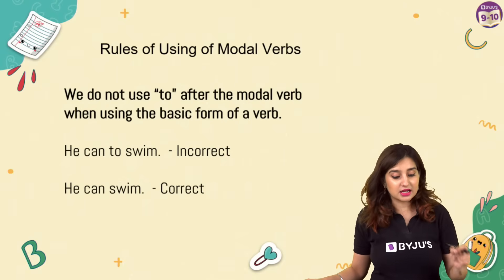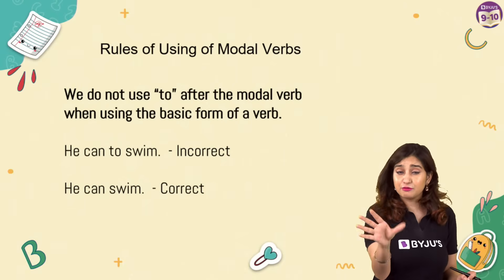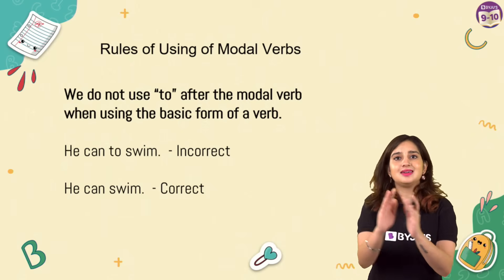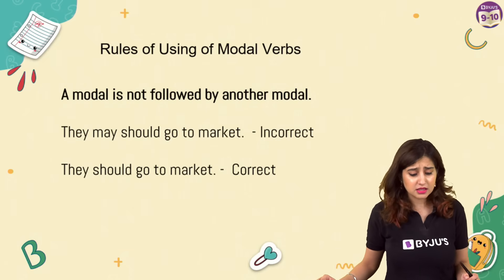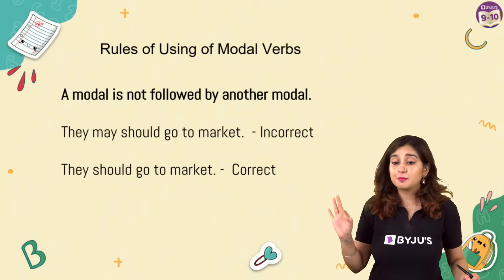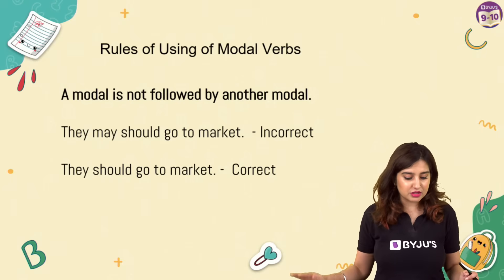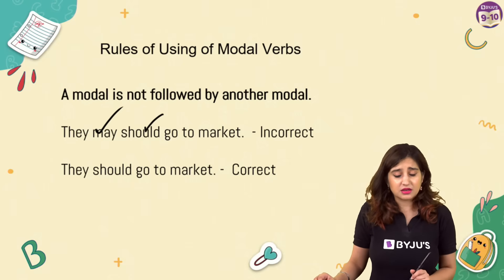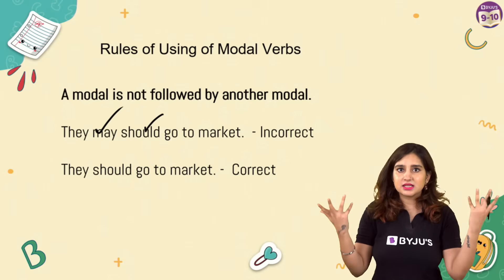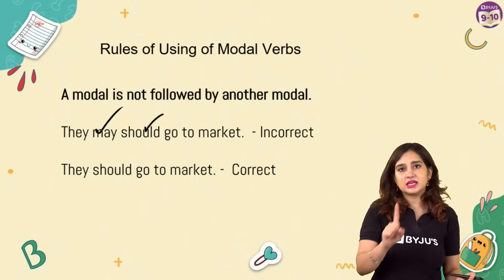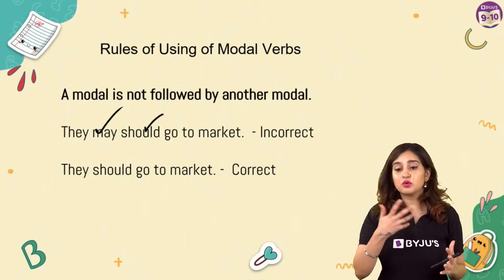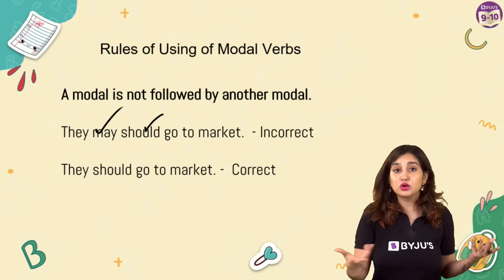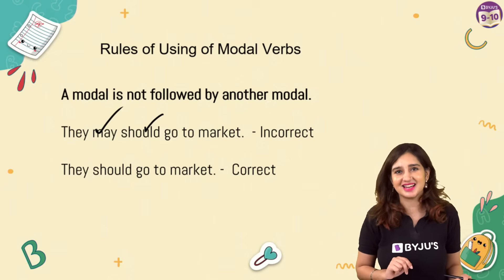Second, we don't use 'to' after the modal verb. 'He can to swim' - no. 'He can swim' - correct. Third, a modal verb is not followed by another modal. 'They may should go to the market' doesn't make sense - should gives a suggestion and may states a possibility, so having both in one sentence is wrong. Keep one modal per sentence: 'They should go to the market' or 'They may go to the market' - both correct, depending on what you want to say.